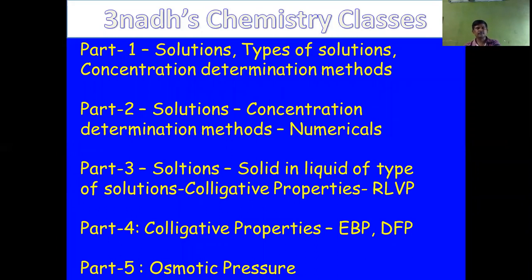In Part 3, I discussed solid and liquid type of solutions and qualitative properties — what they are and their applications. There are four colligative properties; the first one, relative lowering of vapor pressure, was discussed. In Part 4, I continued with elevation in boiling point and depression in freezing point. In this video, we are going to discuss osmotic pressure.